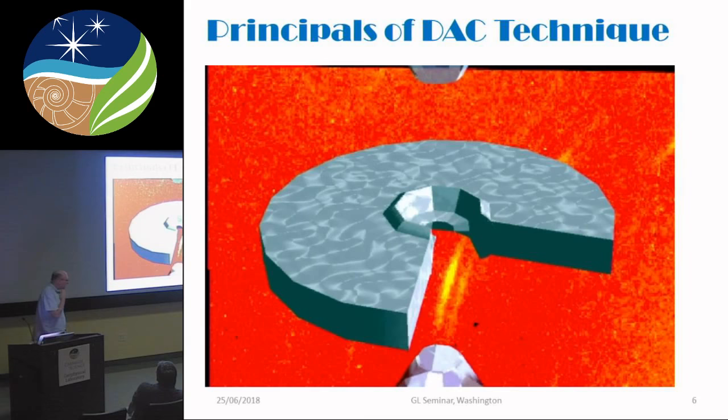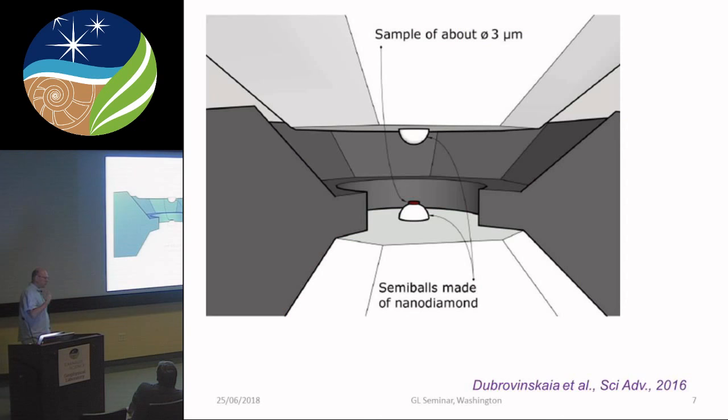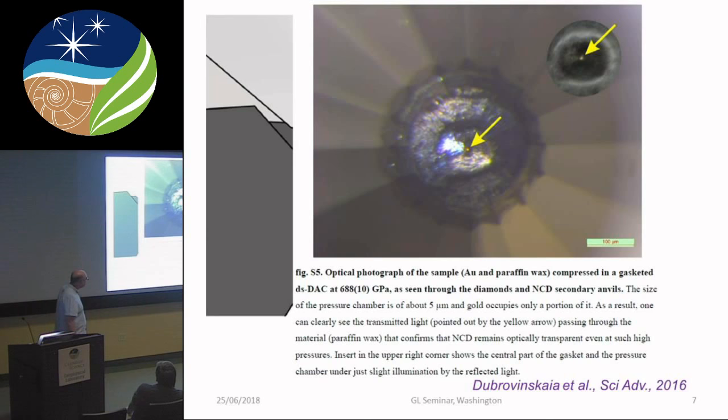I don't need to explain the principle of the diamond anvil cell technique to this audience, since it was also, to a significant extent, born here. I'll just mention what technique is developing with the advent of toroidal anvils, recently reported to achieve pressures over 600 GPa, and the methodology we are developing with the double-stage diamond anvil cell, where we seem to have broken one terapascal of static pressure.